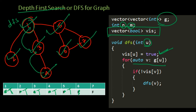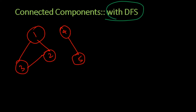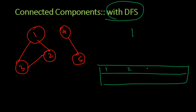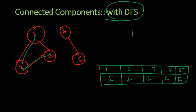Are there any applications to depth first search? There are several, but for this introductory video I'll focus on one: calculating the number of connected components. Let's say we start a DFS from node 1. We create a visited array for nodes 1 through 5, initially all marked as false. Starting DFS from 1, we complete the traversal and visit everything reachable — all of them are marked as true. We know that all connected components of 1 have been visited through DFS.